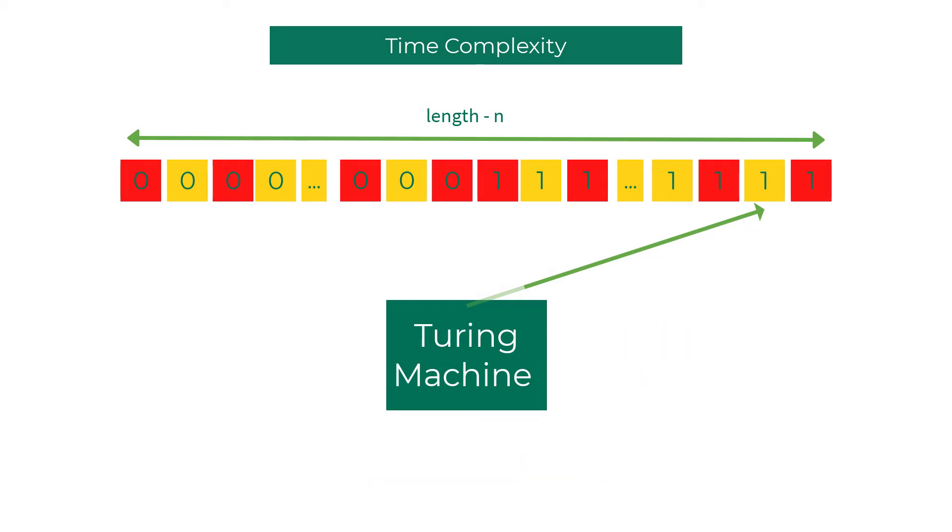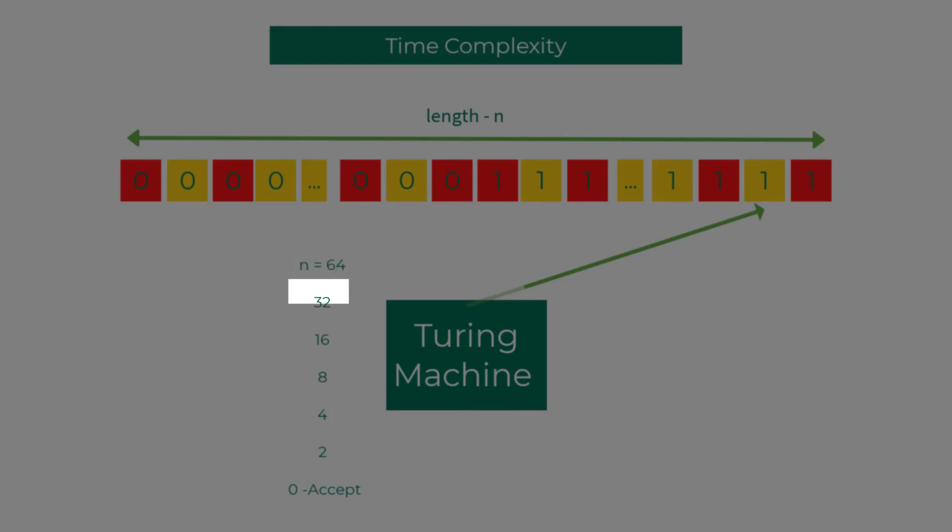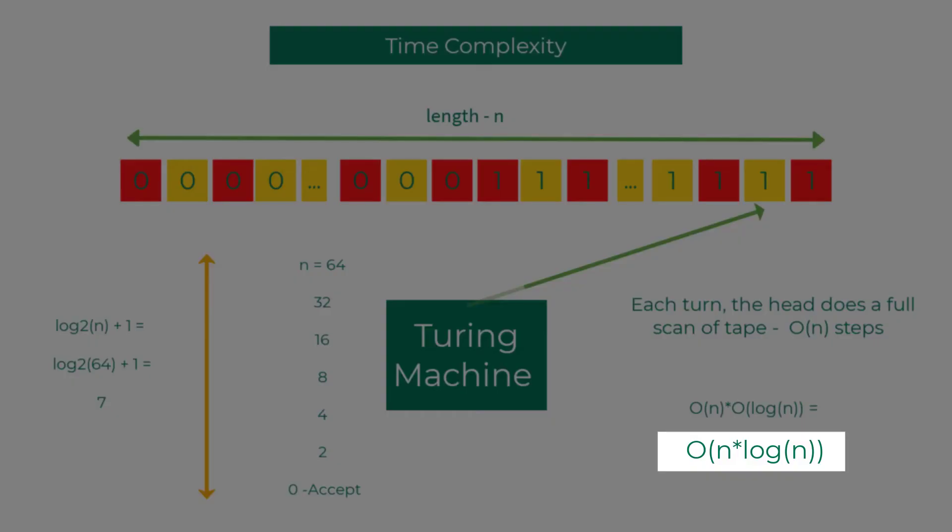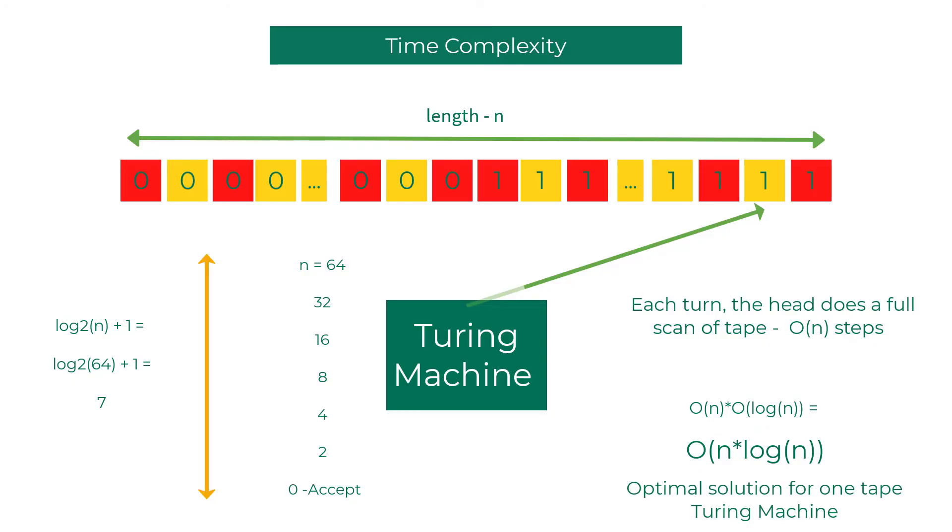Try out few examples if you're still not convinced. Okay, so let's look at the time complexity of the strategy. For input word of size 64, at each turn you're going to deal with half of the actual number of bits, so the number of times you have to repeat this is of the order log base 2 of n. Each turn, the head does a full scan of tape - that's in O of n steps. And O of n multiplied by log n is O of n log n. And this is the most optimal solution for a one-tape Turing machine that decides the given language.